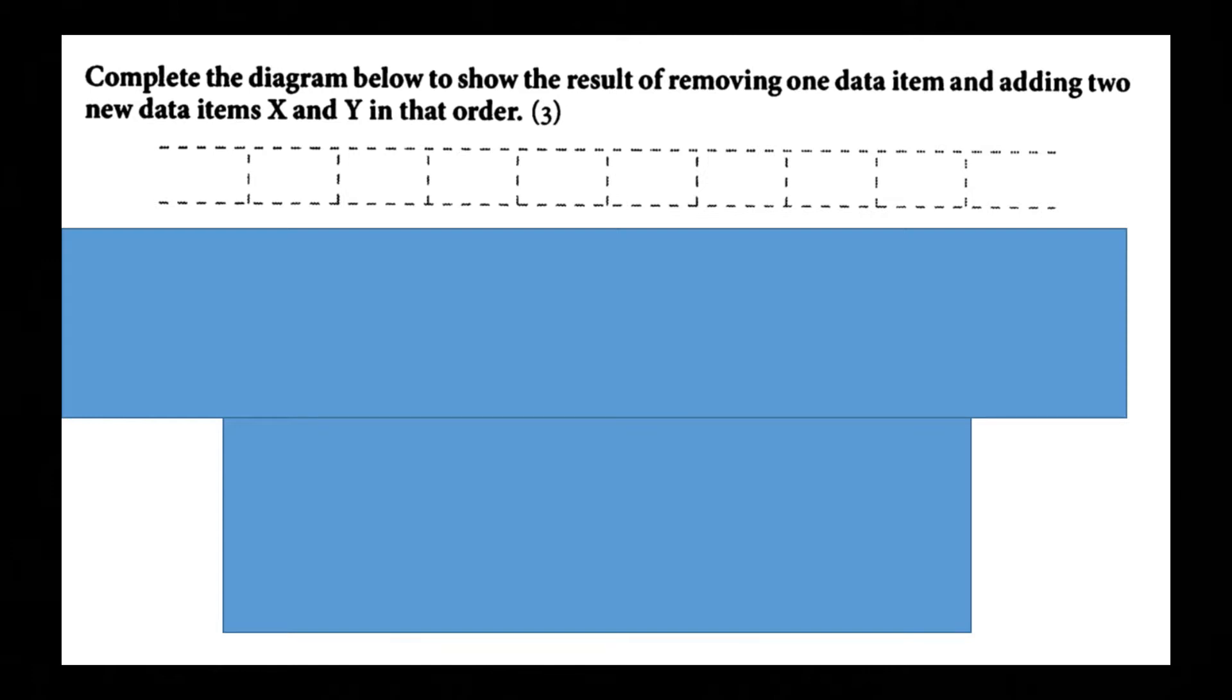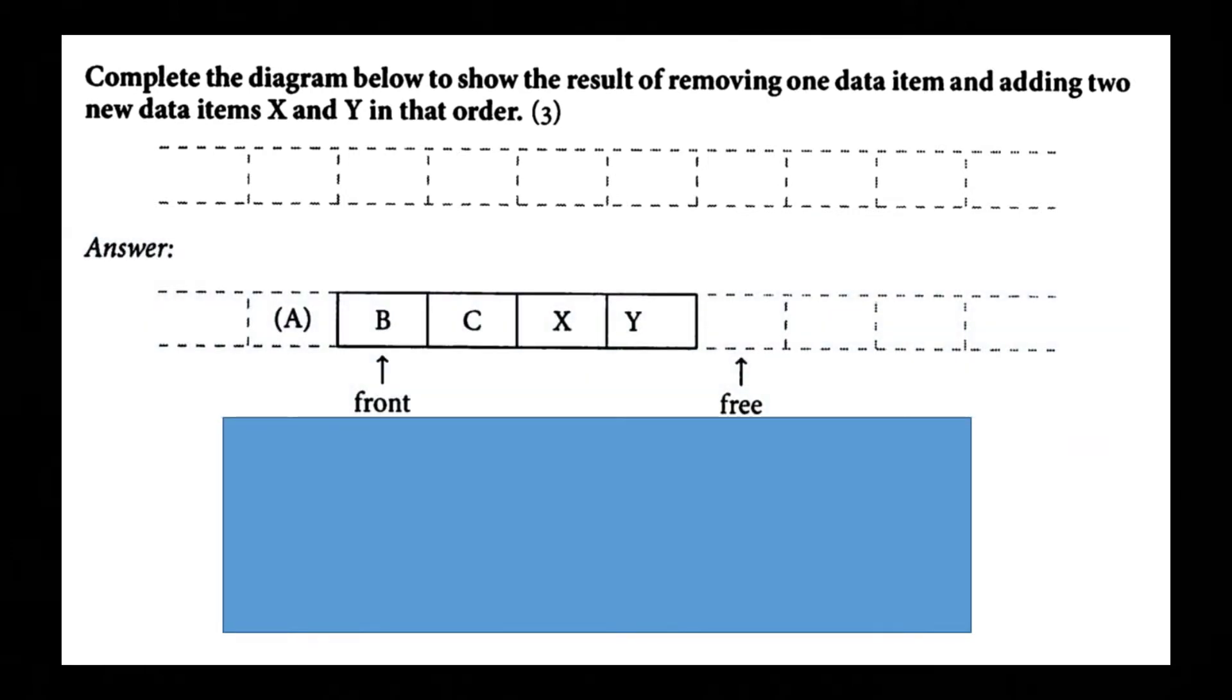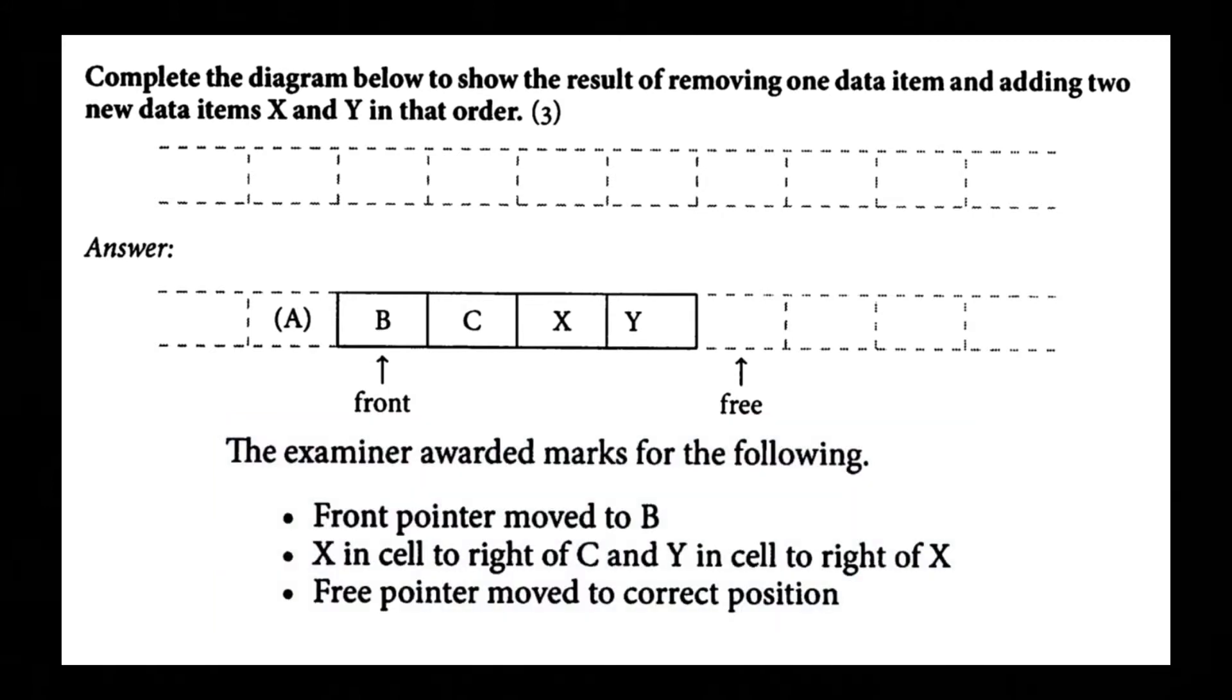Complete the diagram below to show the result of removing one data item and adding two new data items X and Y in that order. So you remove A so A is gone then B is now the front then C then X and Y is on the end then after Y is the free space. So front pointer move to B, X in cell to right of C and Y in cell to right of X, free pointer move to correct position.